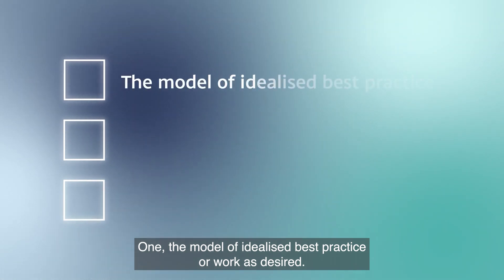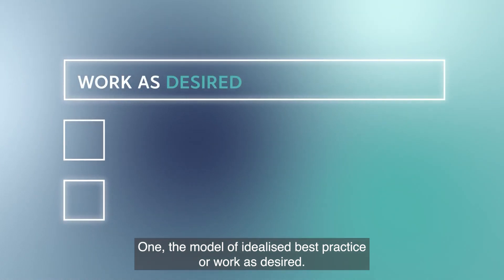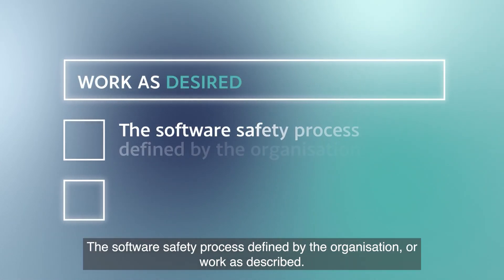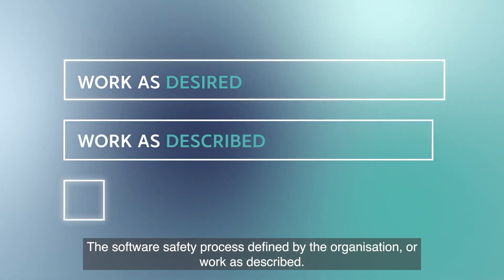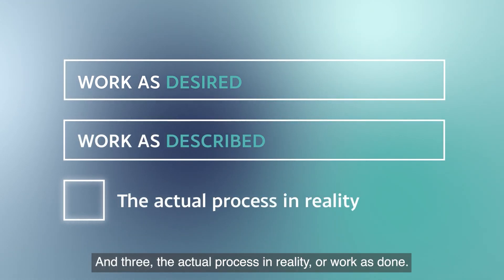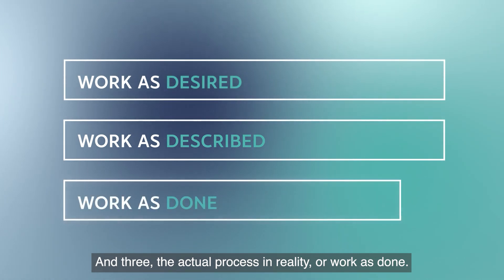One, the model of idealized best practice, or work as desired. Two, the software safety process defined by the organization, or work as described. And three, the actual process in reality, or work as done.